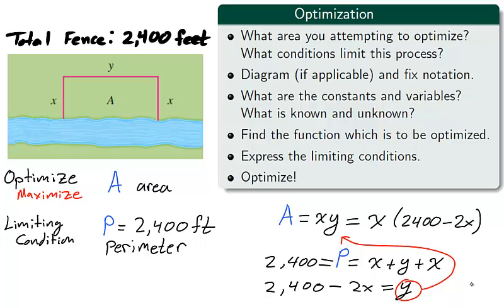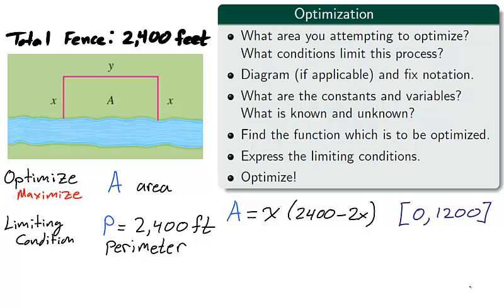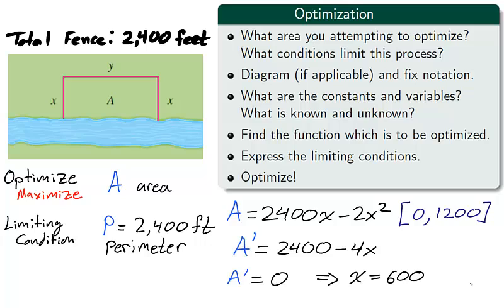We will now optimize the function A. That is, we will use the derivative to find the absolute maximum value of A on the closed interval 0 to 1200. You may ask, why are we working on the closed interval 0 to 1200? Well that is the natural constraint that is placed upon the dimension x. The length of the fence cannot be smaller than 0, while it cannot be greater than 1200 as there are two x's and a maximum of 2400 feet of fencing. The way we will optimize this function is by using the closed interval method introduced in section 3.1. We begin by taking the derivative of A with respect to x, then find the critical numbers of A prime in the interval 0 to 1200. As A is a polynomial, the only critical numbers of A are when A prime is equal to 0, that is, when x is equal to 600.